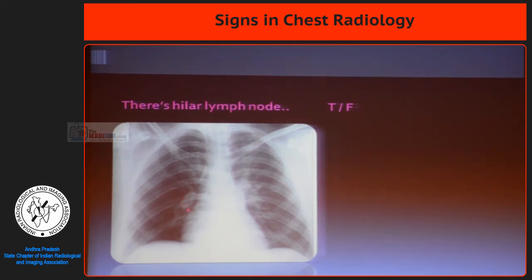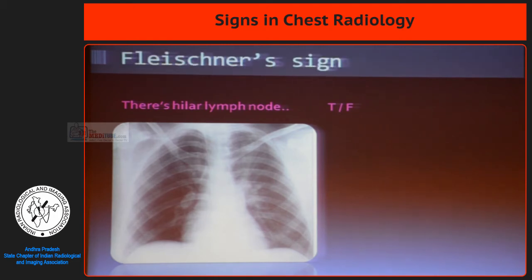Distal to this, where is the pulmonary artery? It is like tapered, structured, constricted — but this part is dilated. What is it? This is the Flissner sign, typically seen in pulmonary thromboembolism.